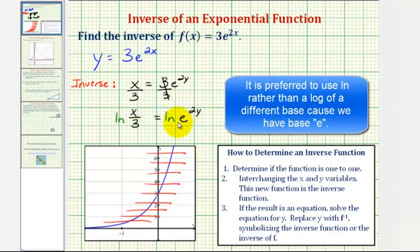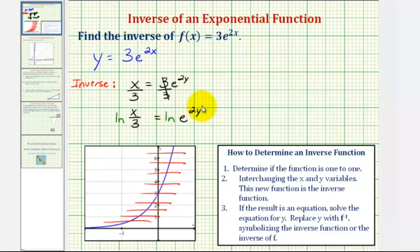We can apply the power property of logarithms, meaning on the right side, we can take the exponent and write it as a product with natural log e. So we have natural log of x divided by three equals two y times natural log e.